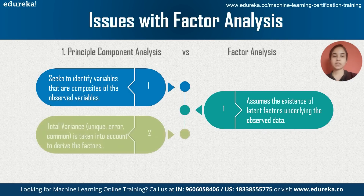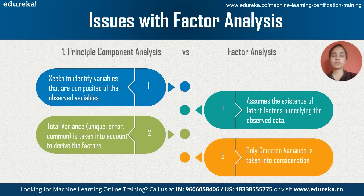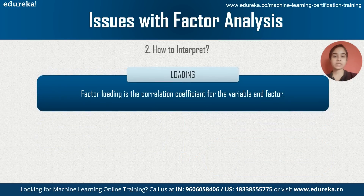In PCA, the total variance in the data is considered — that is, the sum of unique variance, variance due to error, and common variance. In factor analysis, only the common variance or shared variance is considered. Use factor analysis when you want to find latent variables from many variables, and use PCA when you want to eliminate variables with high variance. When the number of variables exceeds 30, the results of PCA and factor analysis are essentially the same.